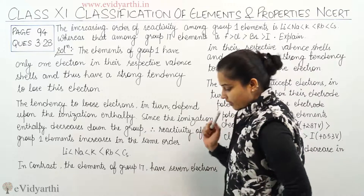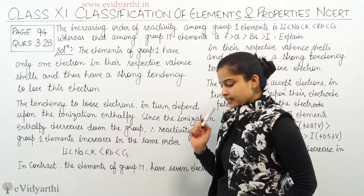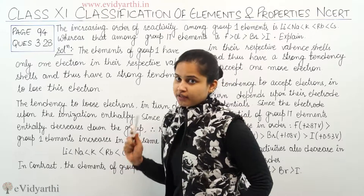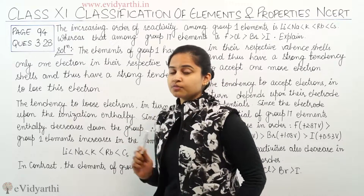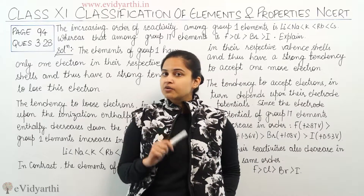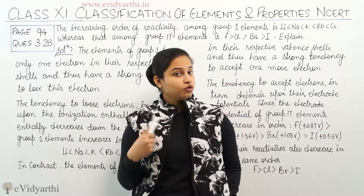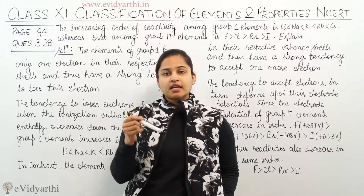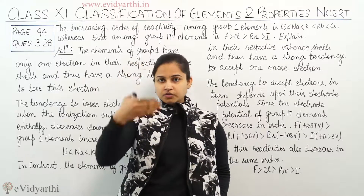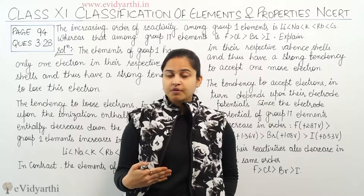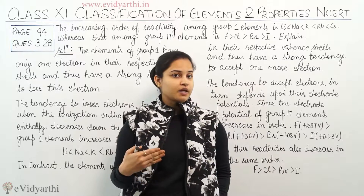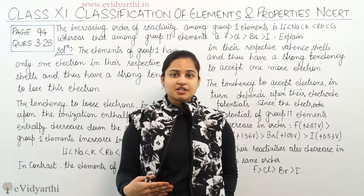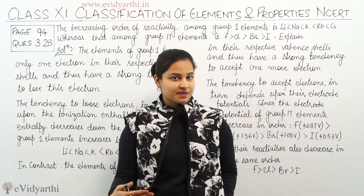The elements in Group 1 have only one valence electron in their outermost shell, so they can easily lose that electron. When we move down the group, the ionization enthalpy or ionization energy decreases because the atomic size increases.